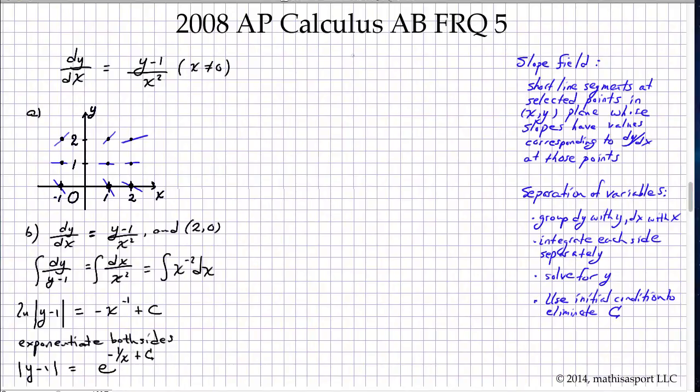Let's just rewrite this. So absolute value of y minus 1 equals e to the negative 1 over x plus c.